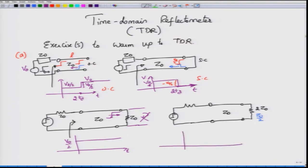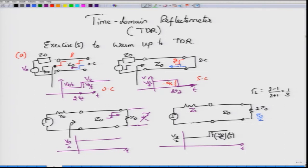If we terminate with 2Z0, the reflection coefficient is (2−1)/(2+1) = 1/3, which is positive. Monitoring the voltage up to 2Td, you see V0/2, and then a jump of magnitude (V0/2)×(1/3). Unlike the open circuit case where the jump is exactly V0/2, in this case D the jump is present but smaller.